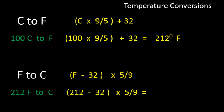When we do that, we get 212 minus 32, multiply that by 5 over 9, and lo and behold, we get 100 degrees Celsius.